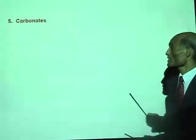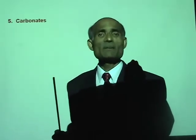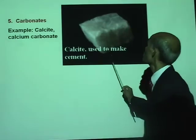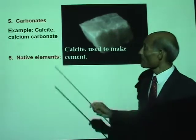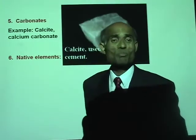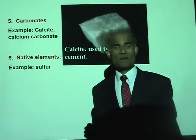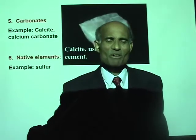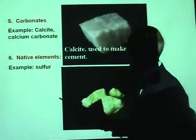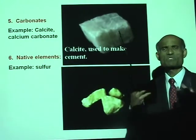Another non-silicate is carbonate — calcium carbonate. The antacid pills that people take are calcium carbonate; eggshells are calcium carbonate — they're all non-silicate minerals. Calcite, or calcium carbonate, is used to make cement. The sixth example of non-silicate minerals is native elements, and the most prominent example is sulfur. Sulfur is yellow in color and gives a very bad smell.